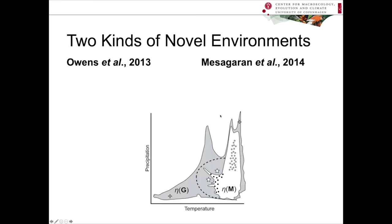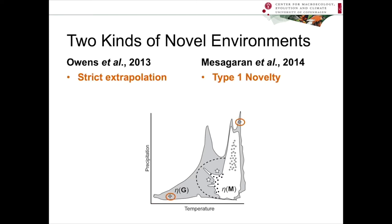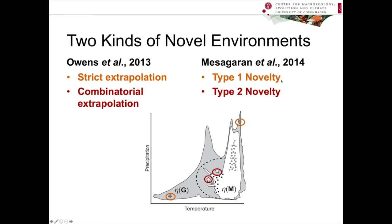I want to note that this is one set of terminology — that of Owens et al. 2013. If you've come across the work of Mescaron et al. 2014, they use different terminology, so I wanted to cover those differences. In Owens et al. 2013, strict extrapolation corresponds to what Mescaron calls type 1 novelty, shown as orange points. And what Owens 2013 calls combinatorial extrapolation, Mescaron refers to as type 2 novelty, shown as stars. These two sets of terms refer to the same kinds of things.